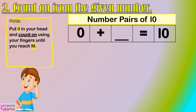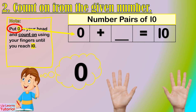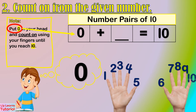Moving on to the second way to find the number pairs of 10 — we count on from the given number. Let's start from 0. Hold 0 in your head, then count: 0, 1, 2, 3, 4, 5, 6, 7, 8, 9, 10. How many fingers have you lifted?